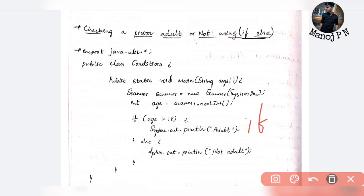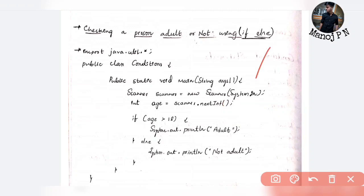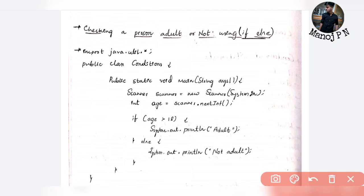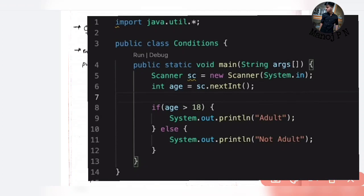The condition: if your age is greater than or equal to 18, it satisfies the condition. You declare the condition — user input, number, age. If age is greater than or equal to 18, print 'adult', else print 'not adult'. Very simple.